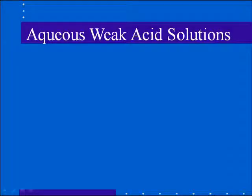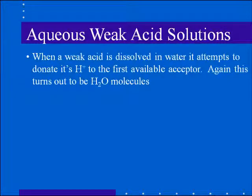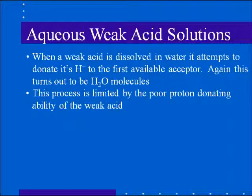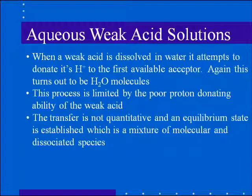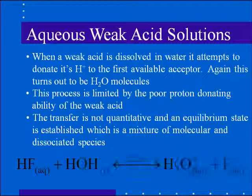How is a weak acid solution different from a strong acid solution? When you dissolve a weak acid in water, it will attempt to donate its proton to the first available acceptor, which again turns out to be a water molecule. But this process is inefficient and is limited by the poor proton donating ability of the weak acid. The transfer to hydronium ions is not quantitative, and what you get at equilibrium is a mixture of molecular acid and dissociated species.